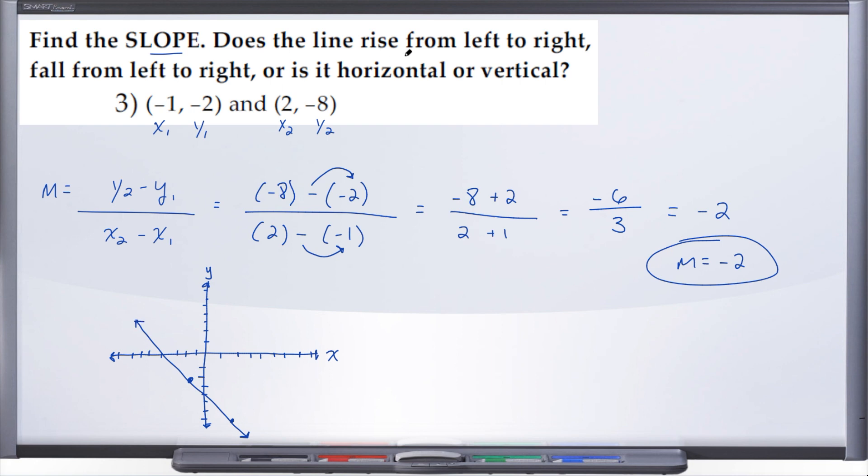So when they ask us, does this line rise from left to right, fall from left to right, or is it horizontal or vertical, well, right away we know that this is not a horizontal line and this is not a vertical line. So we can eliminate those two as a possibility. And when we look at a graph, when we read a graph, just like a book, we are going to read a graph from left to right. So we're going to start from left and work our way to the right. And when your line starts high and as you move from left to right gets lower, your line is said to be falling.